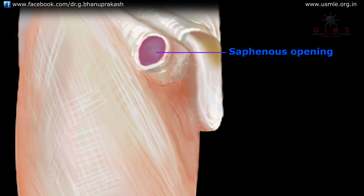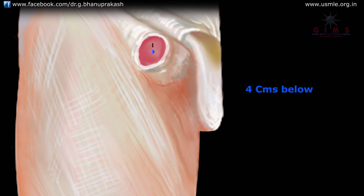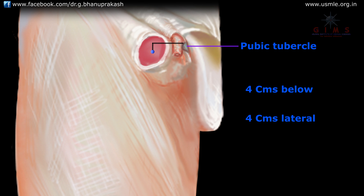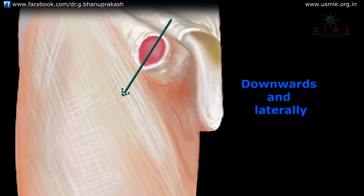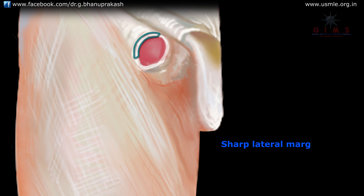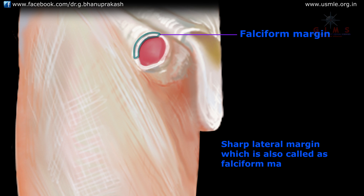Another important modification of the fascia lata is the saphenous opening. The saphenous opening is an oval opening in the fascia lata. The center of the opening is four centimeters below and four centimeters lateral to the pubic tubercle. Its dimensions are about 2.5 centimeters long and 2.5 centimeters broad, with the long axis directed downwards and laterally. It has a sharp lateral margin, also called the falciform margin, which lies in front of the femoral sheath.